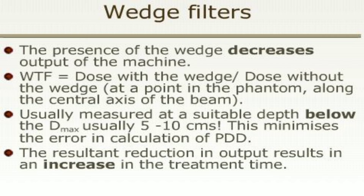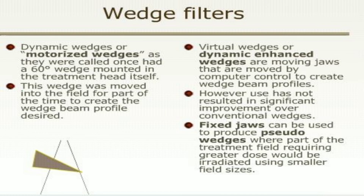Dynamic wedges, or motorized wedges as they were once called, use a 60-degree wedge mounted in the treatment unit itself. This wedge is moved into the field for part of the time to create the desired wedge beam profile. Virtual wedges or dynamic enhanced wedges are moving jaws controlled by computer to create a wedge beam profile; however, their use has not resulted in significant improvement over conventional wedges. Fixed jaws can be used to produce pseudo wedges, where the part of the treatment requiring greater dose is irradiated using a smaller field size.